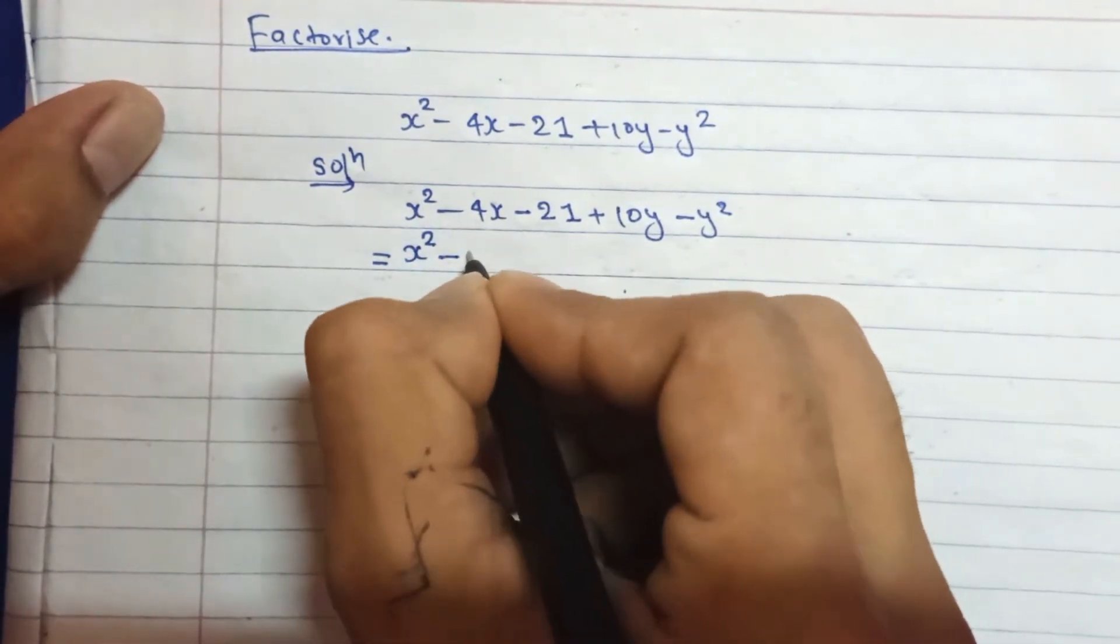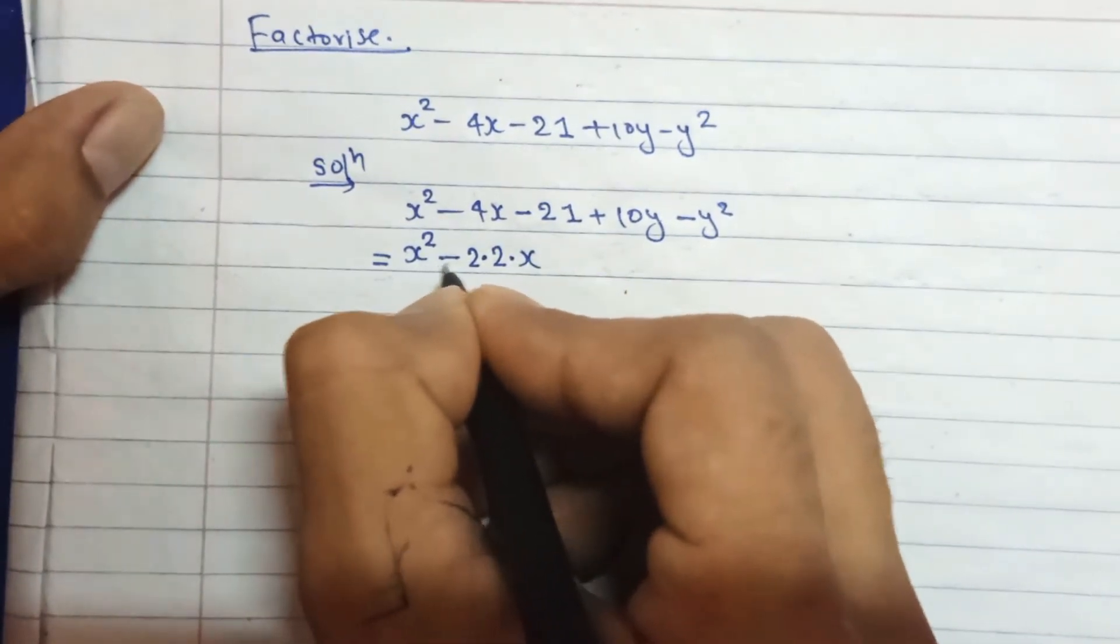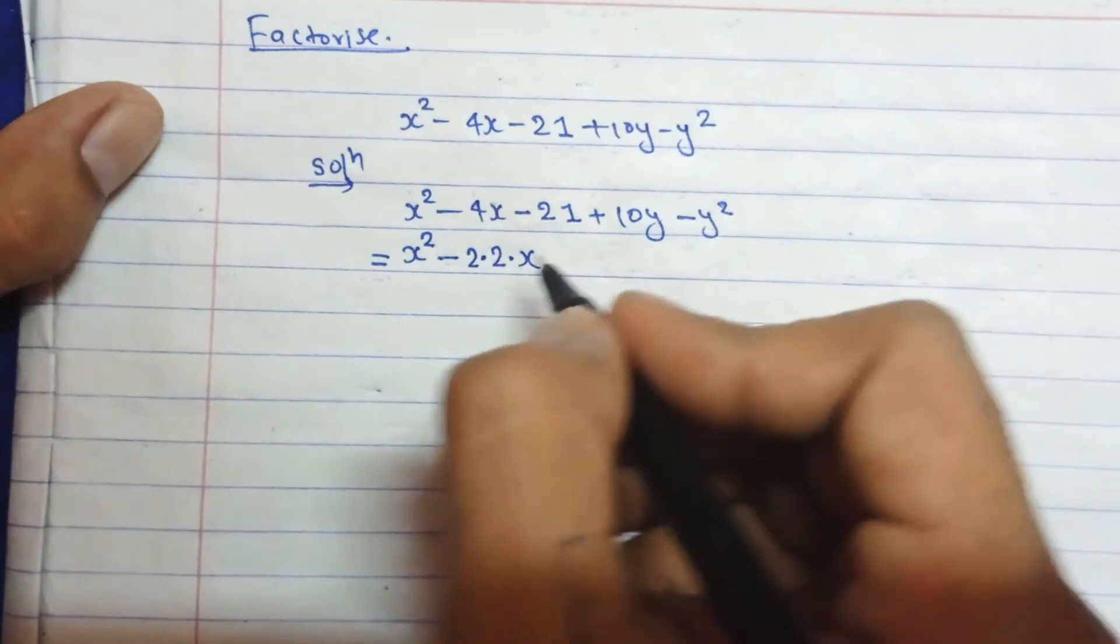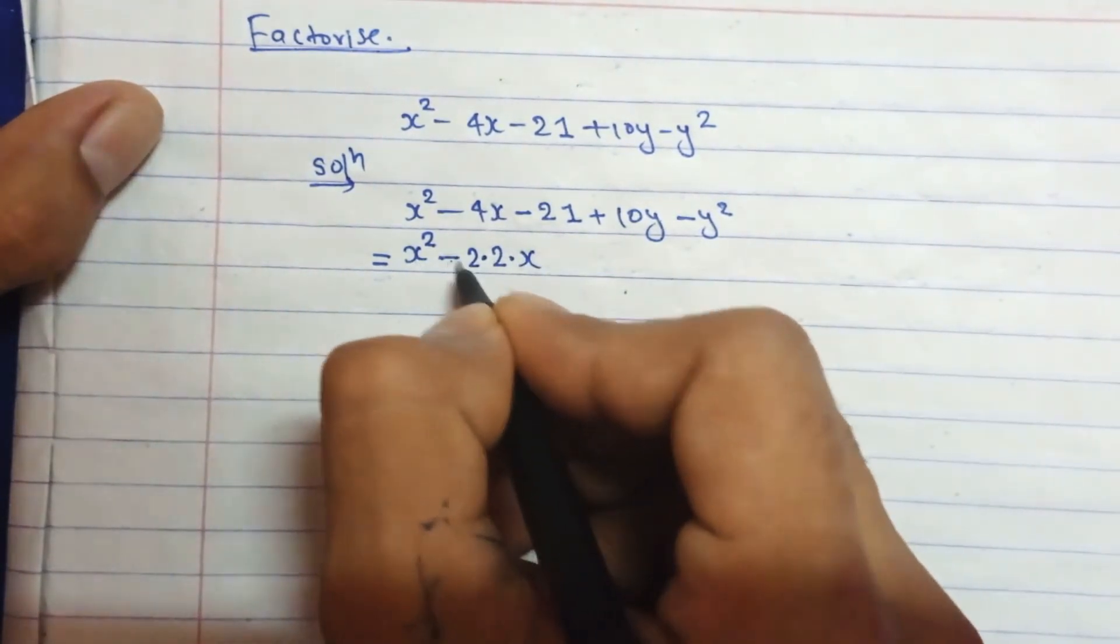It means that you can arrange it in such a way that we can apply the formula (a - b) whole square, that is a² - 2ab + b².